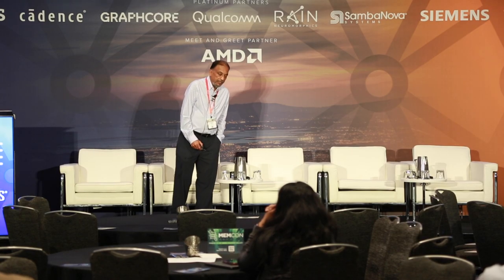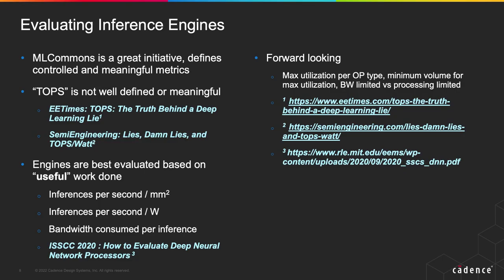Having said all that, how do we evaluate an inference engine? We often get inquiries where somebody will say, 'What's your TOPS per watt?' And it's almost impossible to answer because what is an op? What network are you running? What types of ops are important to you? MLPerf is great — it's well-controlled, well-defined, and it's a set of meaningful metrics. The bottom line is the best way to evaluate an engine is useful work done per unit resource: how many inferences can you do per unit area, per unit watt, what is your bandwidth per inference? These types of metrics are the most meaningful. TOPS per watt is an impossible question for an IP vendor to answer.